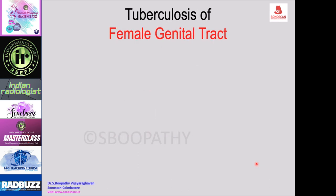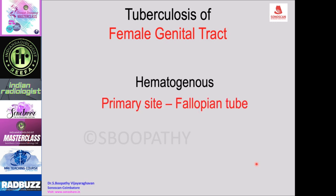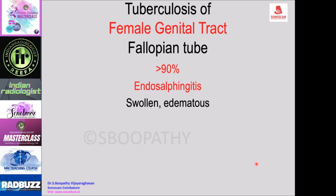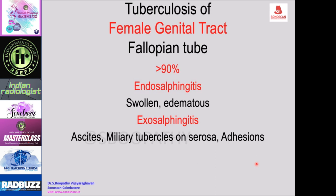Female genital tuberculosis spreads hematogenously with the primary site being the fallopian tube, with contiguous spread to the rest of the female genital tract. Tuberculosis of the fallopian tube is seen in more than 90% of cases. It can present as endosalpingitis with swollen edematous tube, or exosalpingitis with ascites, miliary tubercles on the serosa causing irregular contour and adhesions.